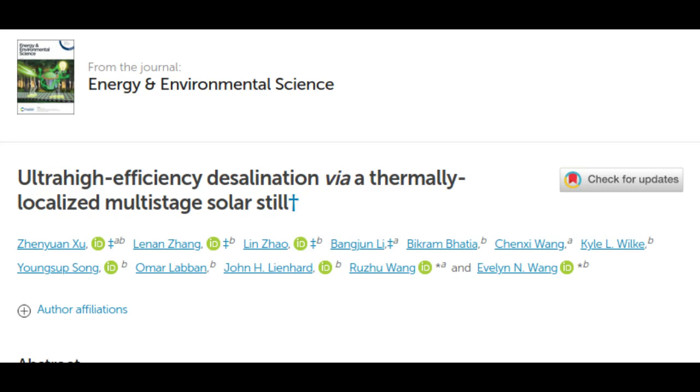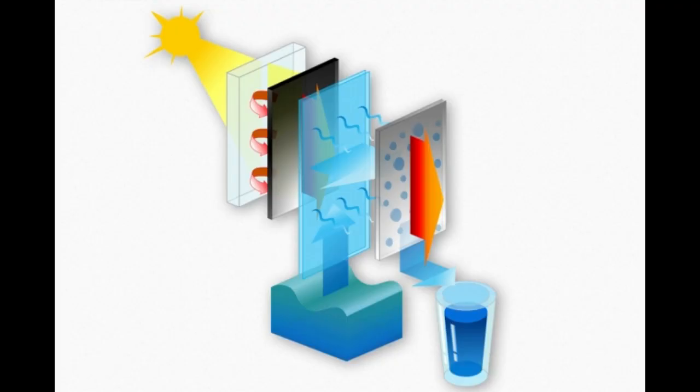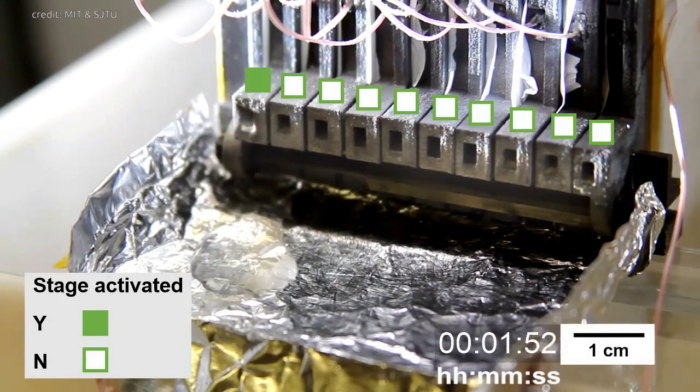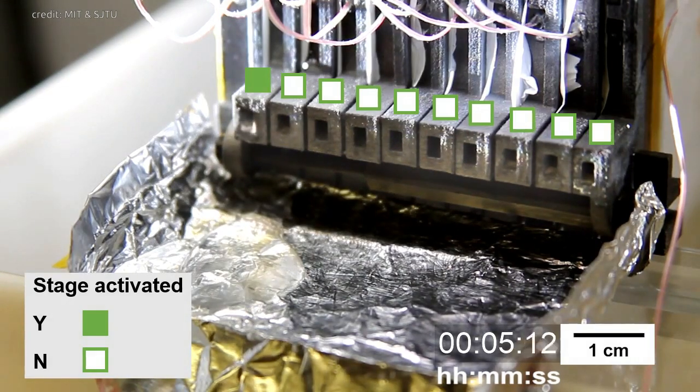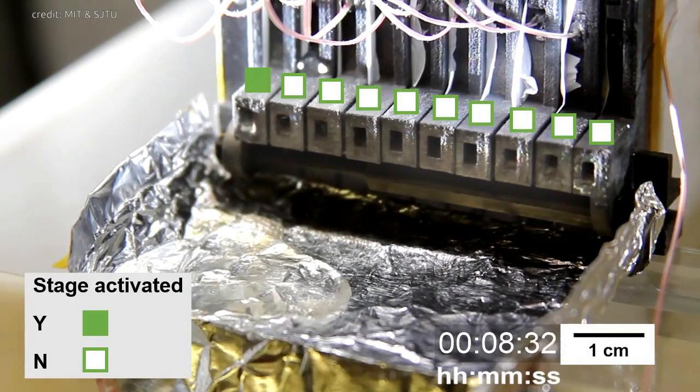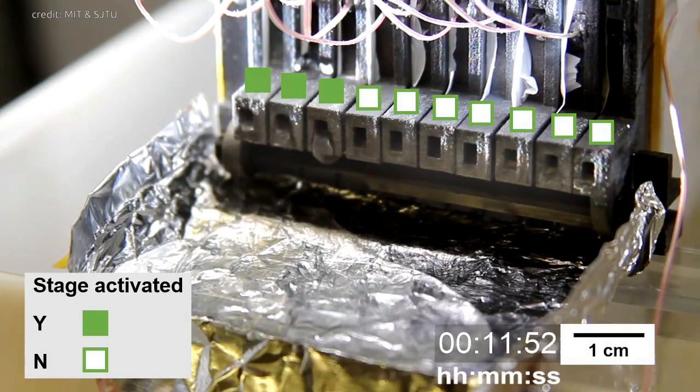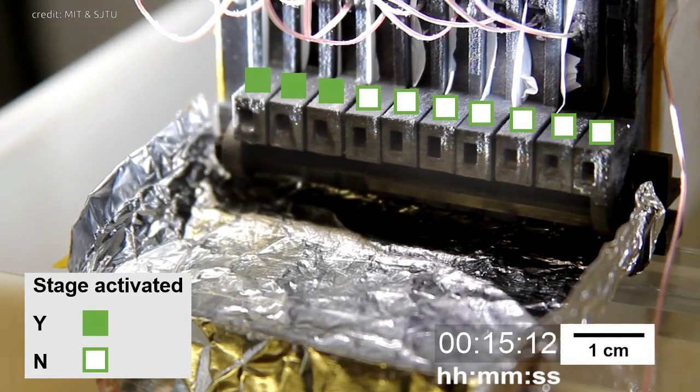The key to the system's efficiency lies in the way it uses each of the multiple stages to desalinate the water. At each stage, heat released by the previous stage is harnessed instead of wasted. In this way, the team's demonstration device can achieve an overall efficiency of 385 percent in converting the energy of sunlight into the energy of water evaporation.